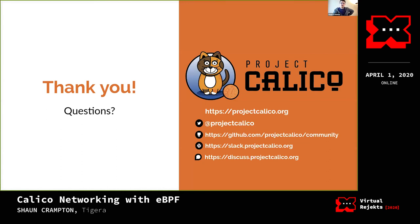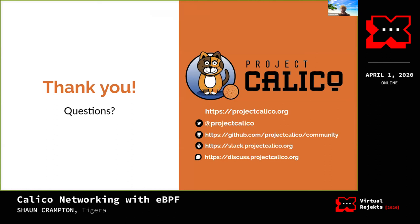Q&A: Can we combine IP tables host protection policy with eBPF pod networking in a single deployment? Not at the moment — when you switch over to BPF mode, the IP tables stuff is disabled. But adding host protection is on our list; there are just a few things we need to do before that. What is the difference between Calico and Cilium eBPF data planes? They both use BPF, but I don't know much about the internals of their approach and don't want to comment too much on a competitor's approach.